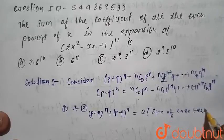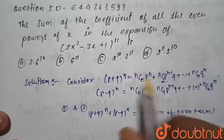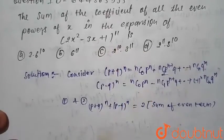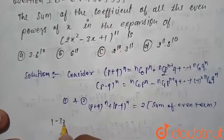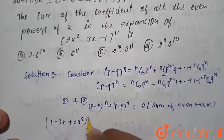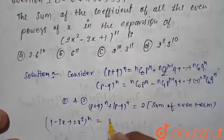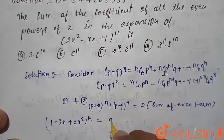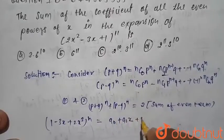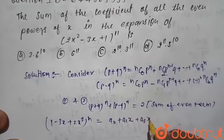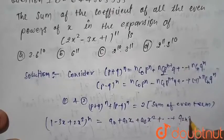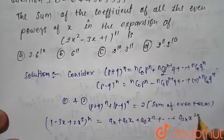Similarly, this concept is used in this problem. We write the equation: (1 − 3x + 2x²)^n = a0 + a1·x + a2·x² + ... + a2n·x^(2n).